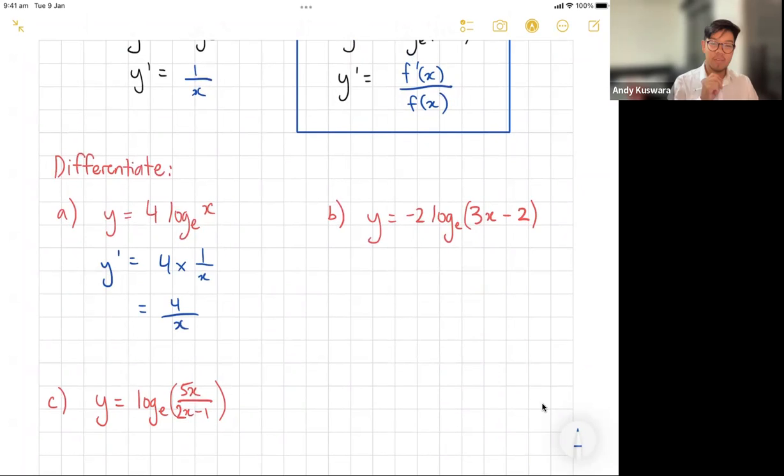For b, we've got y here and we've got this negative two, so it's going to be -2 times, and I'm going to do my derivative of the bracket over my original of the bracket. So y dash in this case is just going to become -6 over 3x - 2. That's it.